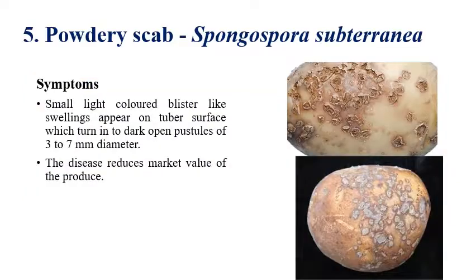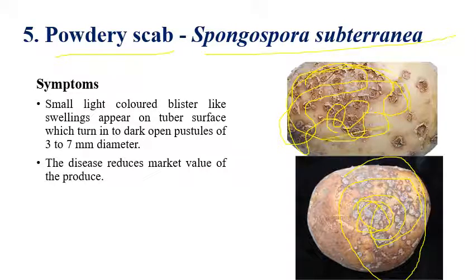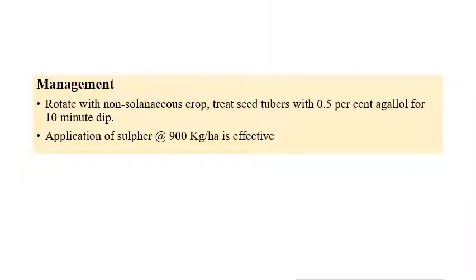Powdery scab is caused by Spongospora subterranea. The name itself indicates powdery scab. Blister-like swellings or pustules can be seen on the tubers, which look like psoriasis, where the skin appears to peel off. The pustules can be up to three to seven millimeters in diameter and reduce the market value. For management: crop rotation with non-solanaceous crops, treatment of tubers with 0.5 percent agallol for 10 minutes, and application of sulfur at 900 kilograms per hectare.